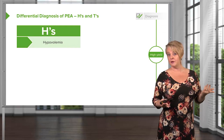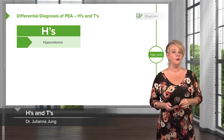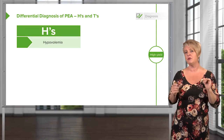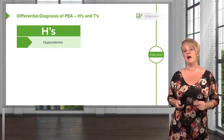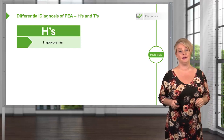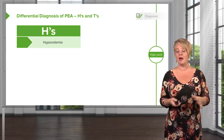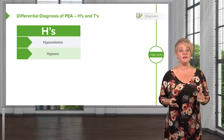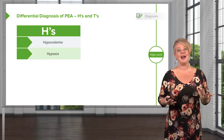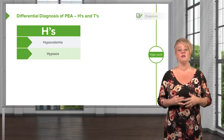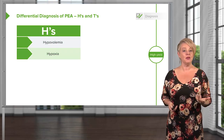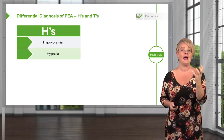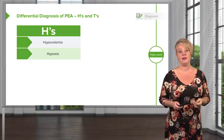What's your differential diagnosis for PEA? There's a common mnemonic called the H's and T's. I'll tell you a secret — I don't love it because it doesn't force you to think physiologically, but many students find it useful so we'll go through them. Hypovolemia: if you don't have blood volume, your heart's going to be empty with poor output. Hypoxia: we make energy from oxygen and glucose, so if you're hypoxic, aerobic metabolism fails and you can't produce enough energy to drive cardiac contraction — making it a potential cause of PEA.